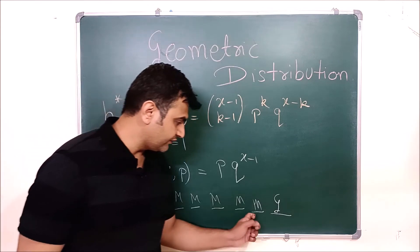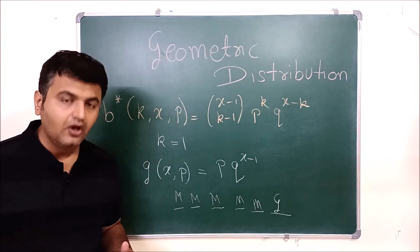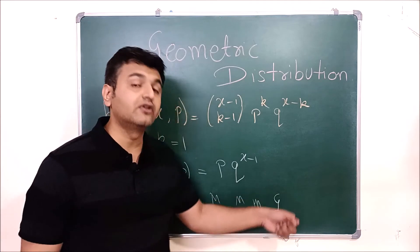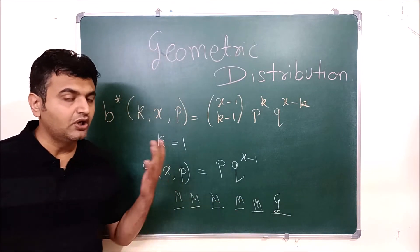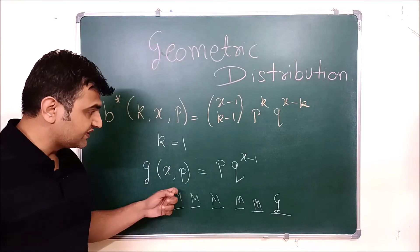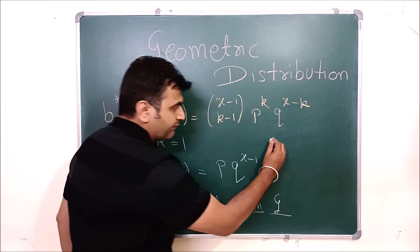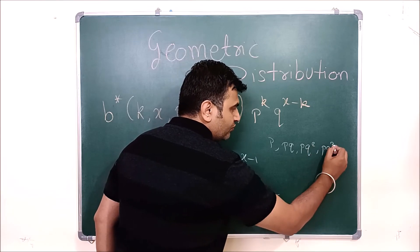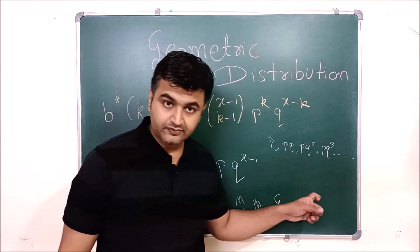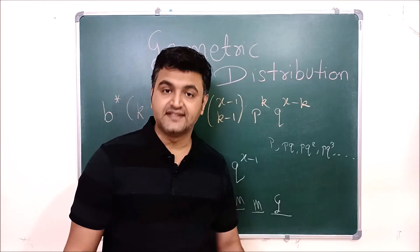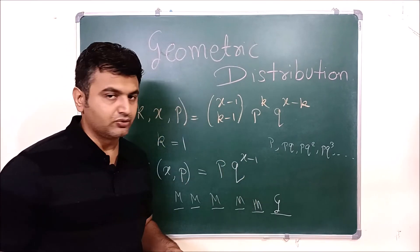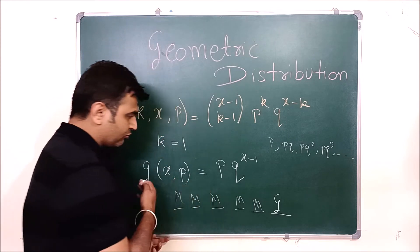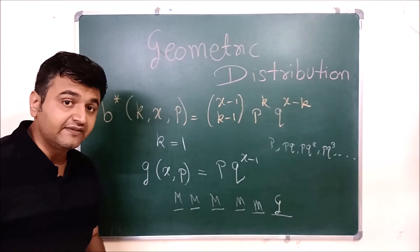Whenever the first success comes into the picture, think of geometric distribution. Like a footballer - what is the probability that you score your first goal? All earlier shots are missed, and at the sixth trial you score your first goal. Another way to phrase it: what is the probability of a number of successive failures before your first success? It's called geometric because taking x=1,2,3... gives p, pq, pq², pq³ - a geometric progression, or geometric series when summed.